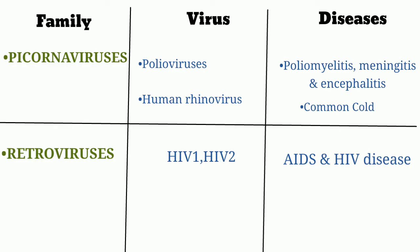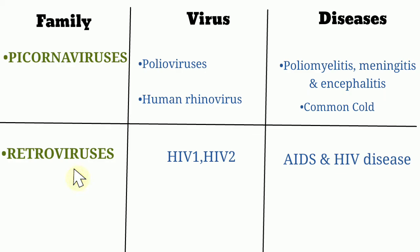The fifth medically important family is Picornaviruses, which contains two important viruses: poliovirus, which causes poliomyelitis, meningitis, and encephalitis; and human rhinovirus, which causes the common cold. The sixth family is Retroviruses, which consist of HIV-1 and HIV-2, causing AIDS and HIV disease in humans.